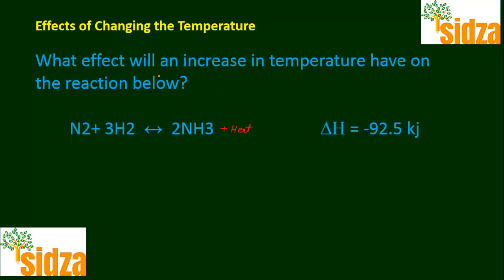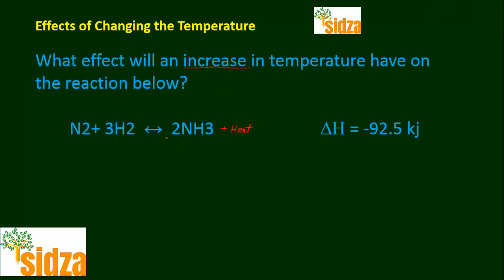The question is: when you increase the temperature, what effect will that have on this reaction? An increase in temperature means the equilibrium will try to absorb that heat and decrease the temperature. So in this particular system, it is the backward reaction that will be favored.